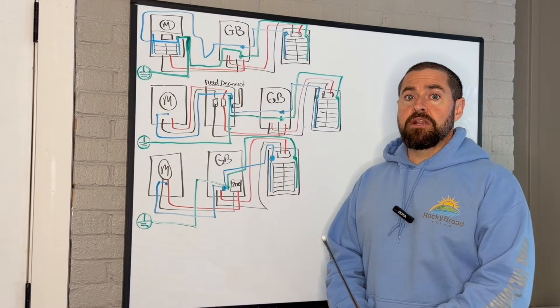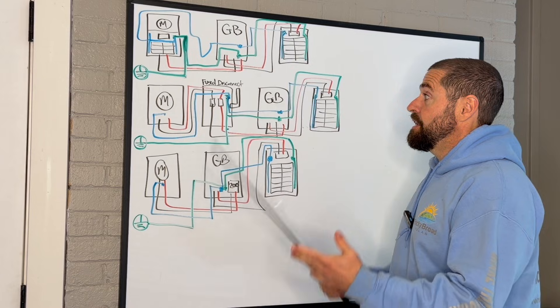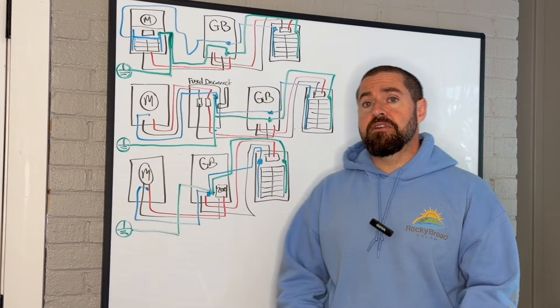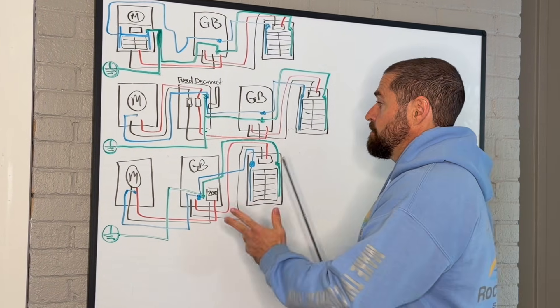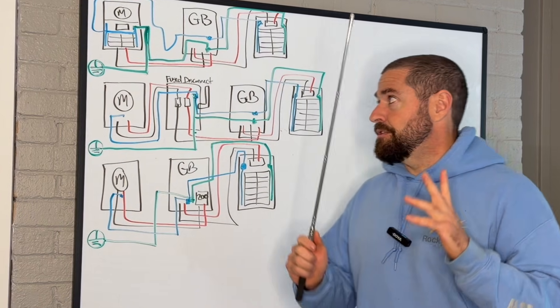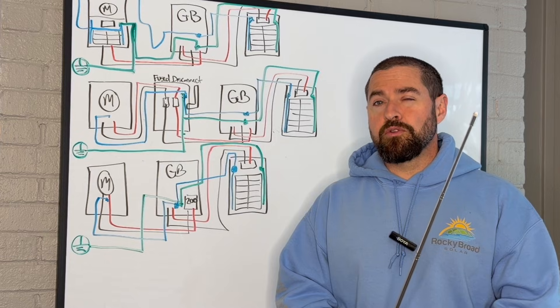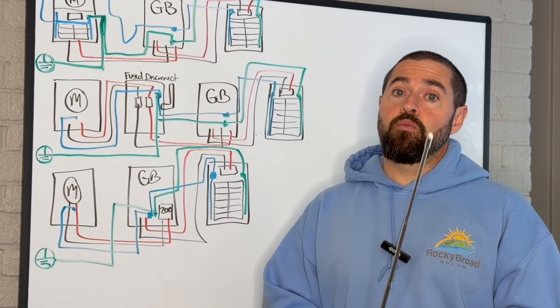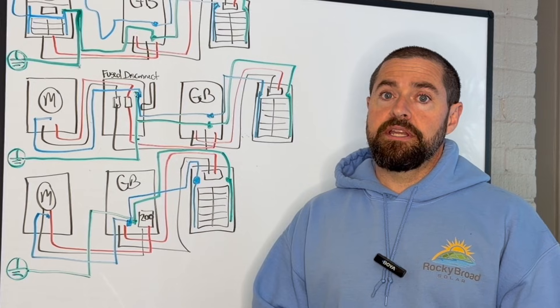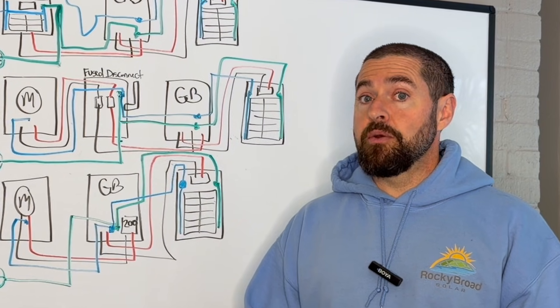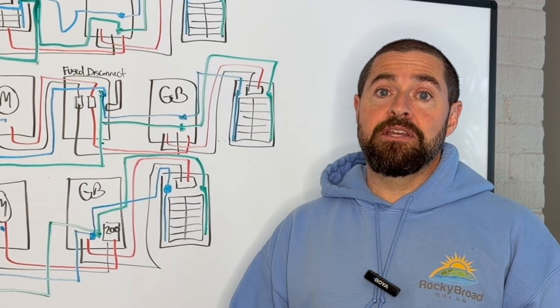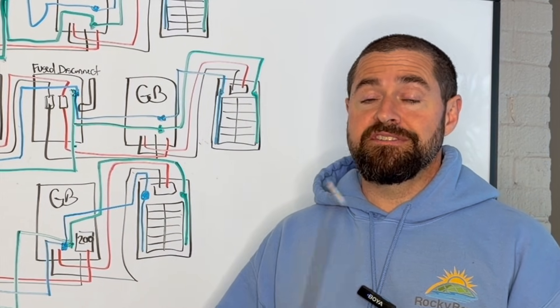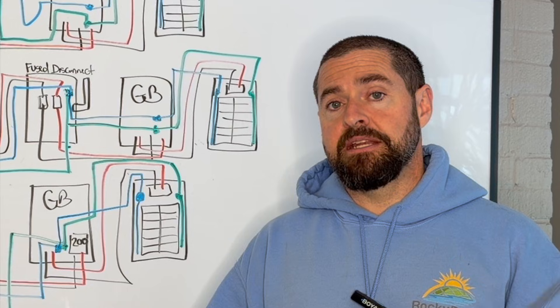There's kind of three main configurations that you're going to run into when installing the EG4 GridBoss on your electrical service. We're going to go over those three options right now and the grounding and bonding that goes along with it. This is one electrical issue that a lot of people overlook or don't fully understand, especially if they're not licensed electricians. This is one of the most critical things about doing this kind of electrical work. Doing so incorrectly could cause equipment damage or create a very dangerous situation for people around your equipment or your home. This is very critical, very important to understand.